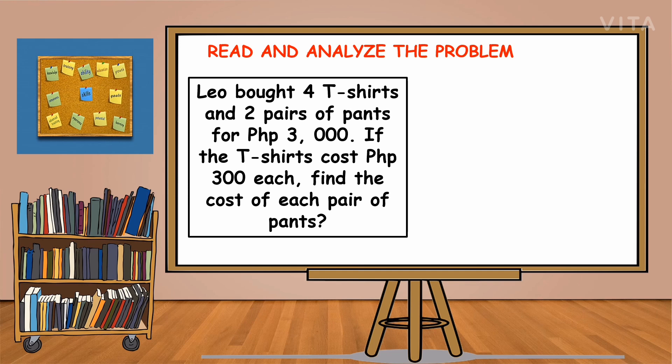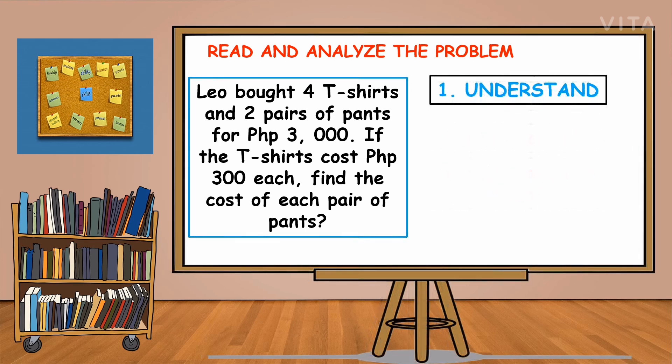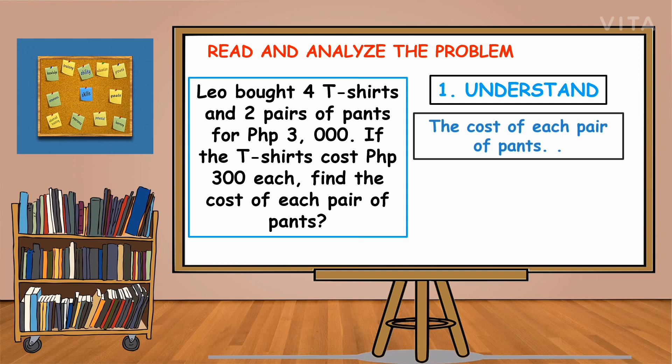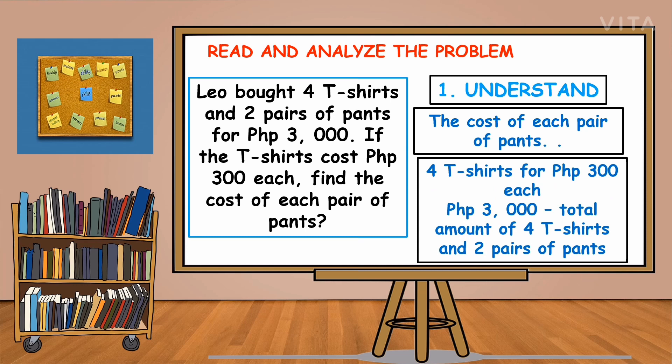Applying the first step, we're going to understand the problem by answering what is asked and what are the given numbers. We are looking for the cost of each pair of pants. The given numbers are 4 t-shirts for 300 pesos each and 3,000 pesos, which is the total amount of 4 t-shirts and 2 pairs of pants.